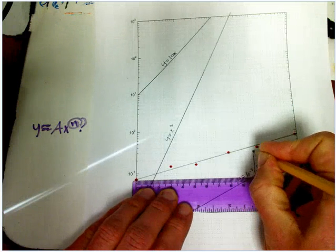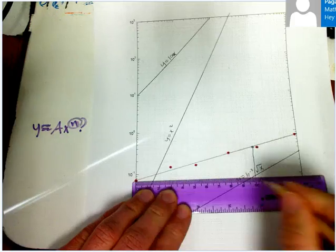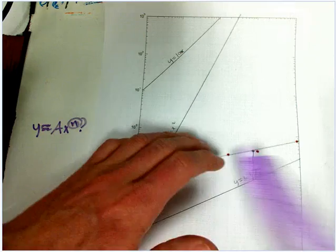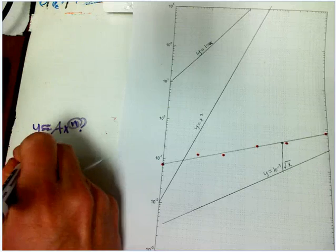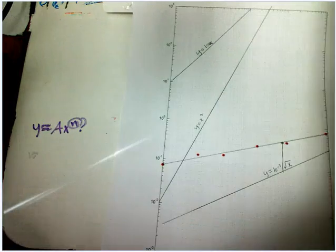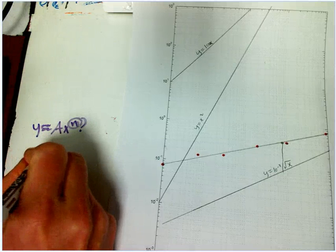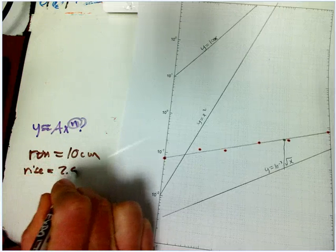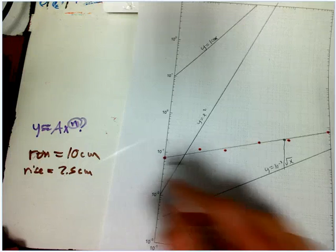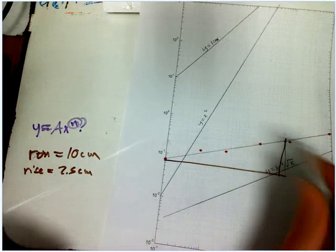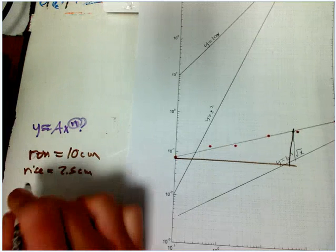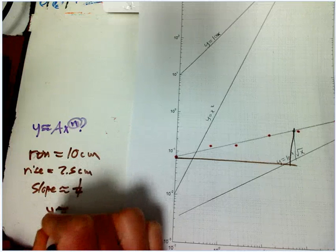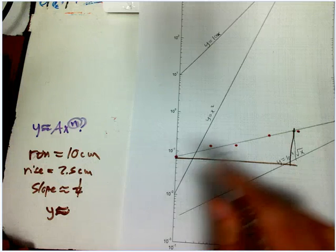The width, the run, is 10 centimeters and the rise is about 2.5. Run is 10 centimeters, the rise is 2.5. Notice when I do that, I'm not looking at these scales. I'm really looking at the physical run and rise and just taking the geometric slope of that line. That's what was equal to the exponent, and the slope is rise over run, right about a quarter.